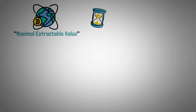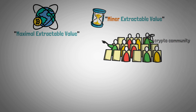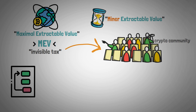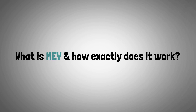The crypto space term maximal extractable value, previously known as miner extractable value, has recently attracted a lot of attention from the cryptocurrency community. MEV is sometimes referred to as the invisible tax that validators levy on users of a crypto economy by rearranging and modifying transactions during the validation process. So what is MEV and how exactly does it work?